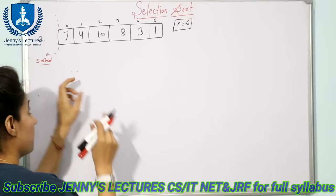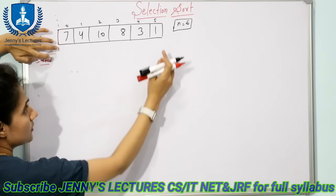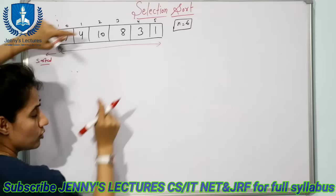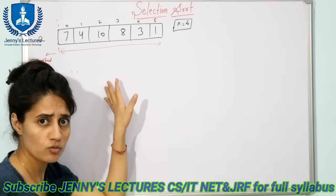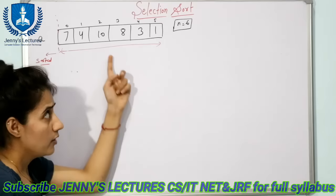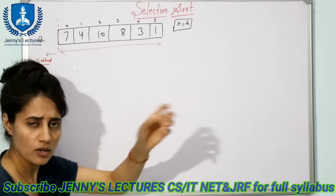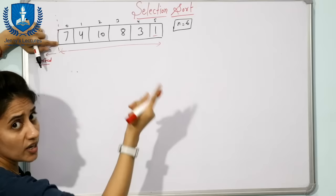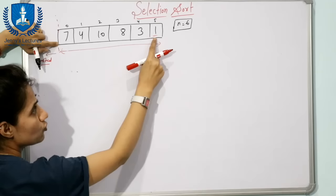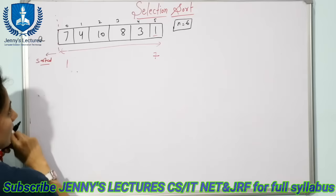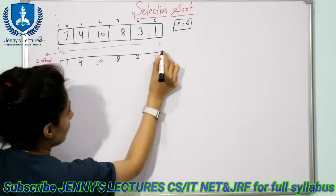Now let us take this example. This is our array. The sorted subarray is initially empty and the entire array is unsorted. From this subarray find out the minimum element using linear search — consider the first element as minimum and compare with all others. The minimum element here is 1. This 1 would be swapped with element 7, which is at the starting of the unsorted subarray. So 1 goes here and 7 goes there. The remaining elements 4, 10, 8, and 3 stay the same.